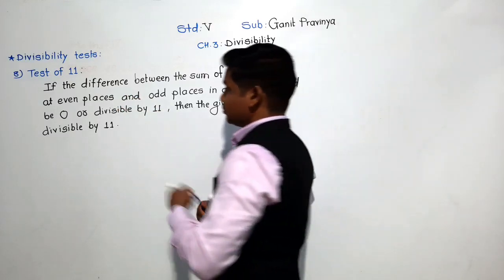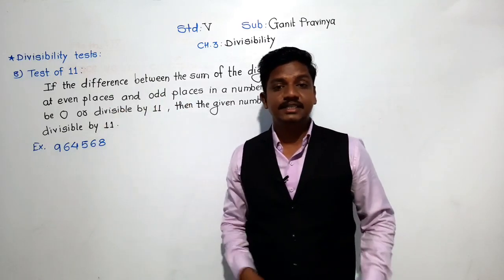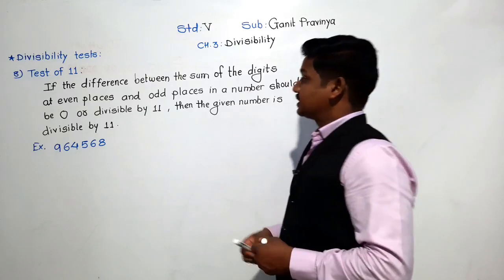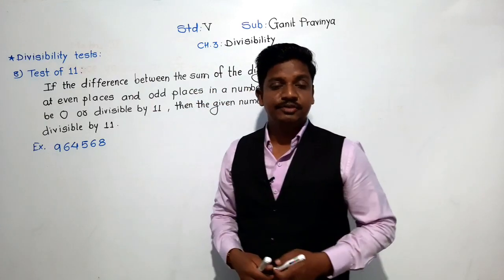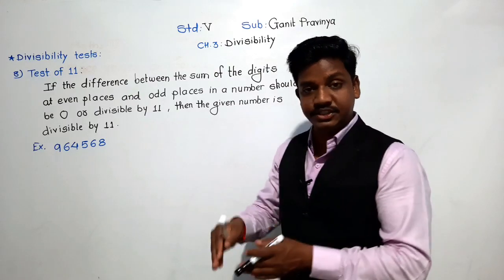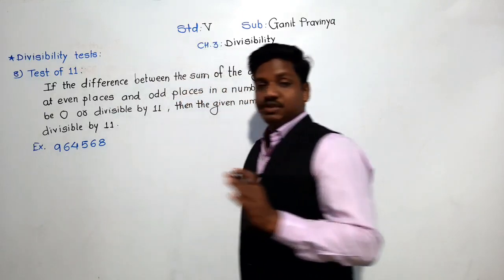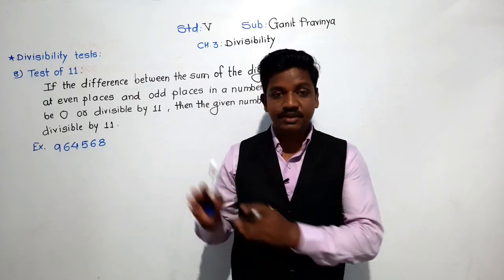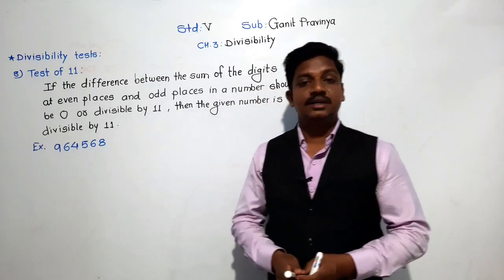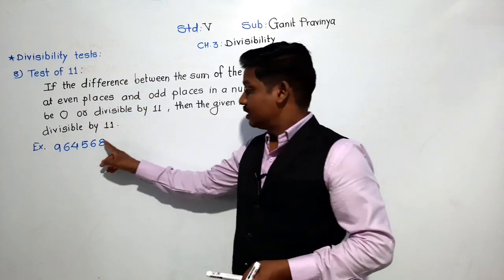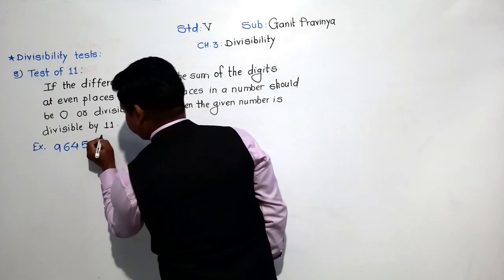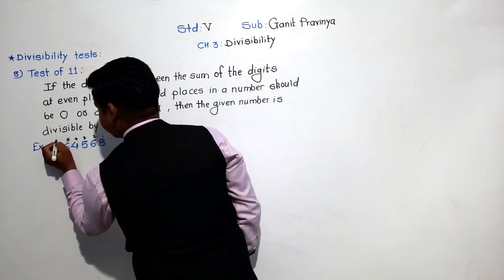Let us see an example. Take the number 9,64,568. We have to check whether this number is divisible by 11. As per the test, we must find the sum of digits at even places and the sum of digits at odd places. We number each digit from the right: 1st, 2nd, 3rd, 4th, 5th, 6th.